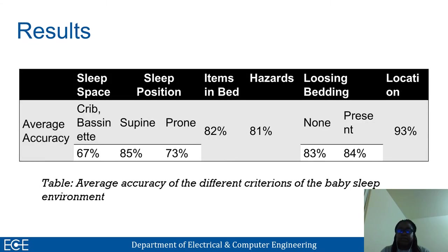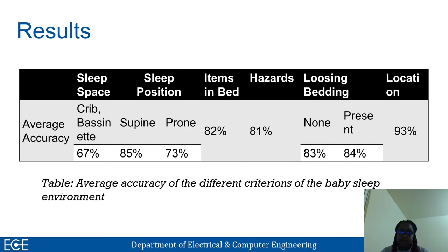The table below presents the average accuracy of the different classifications of the baby sleep environment. As we can observe, these results do not yet reach state of the art in terms of semantic segmentation accuracy. This is mainly because we are still building our dataset, especially for baby sleep environments, which is really difficult to acquire because of privacy concerns.